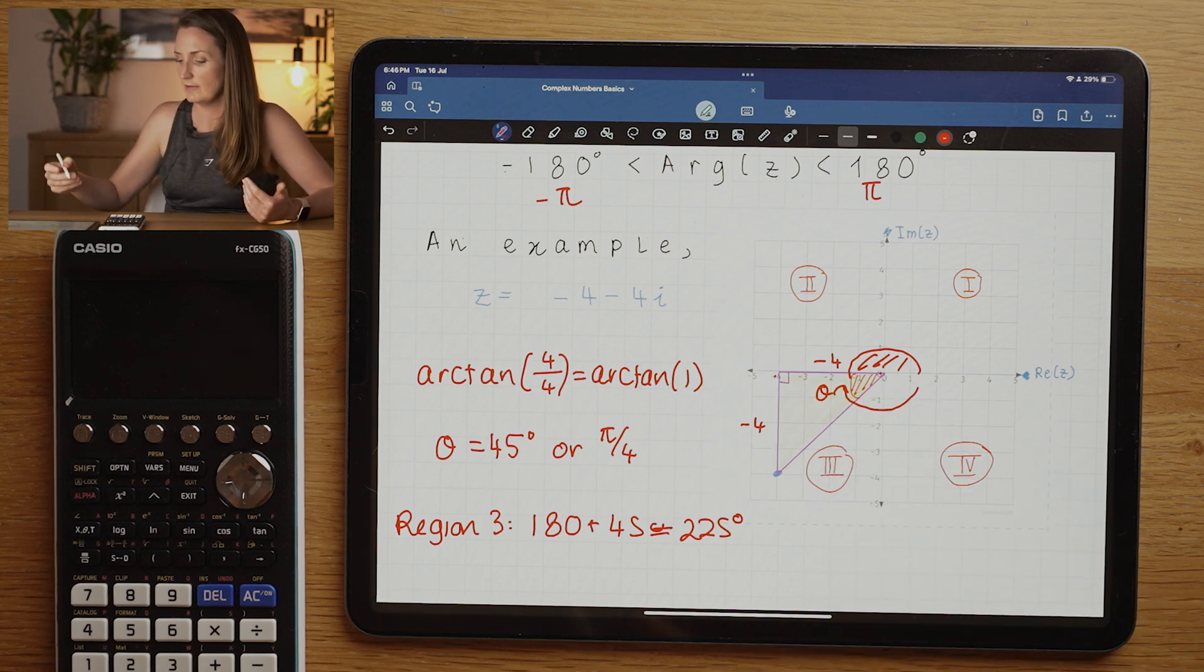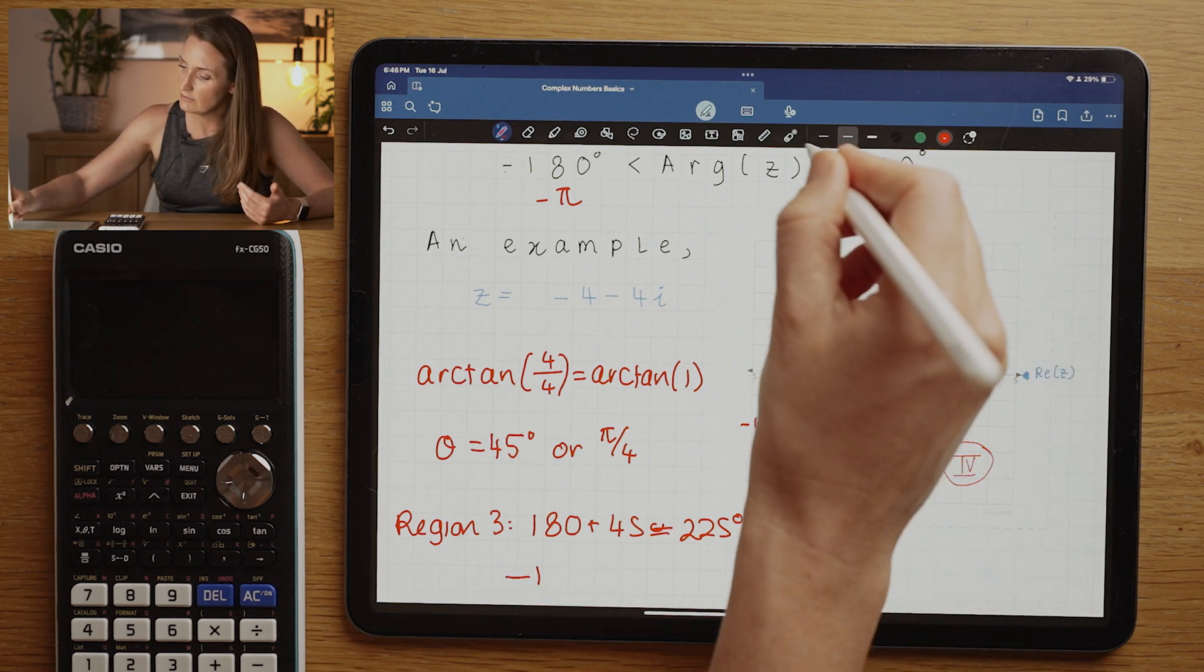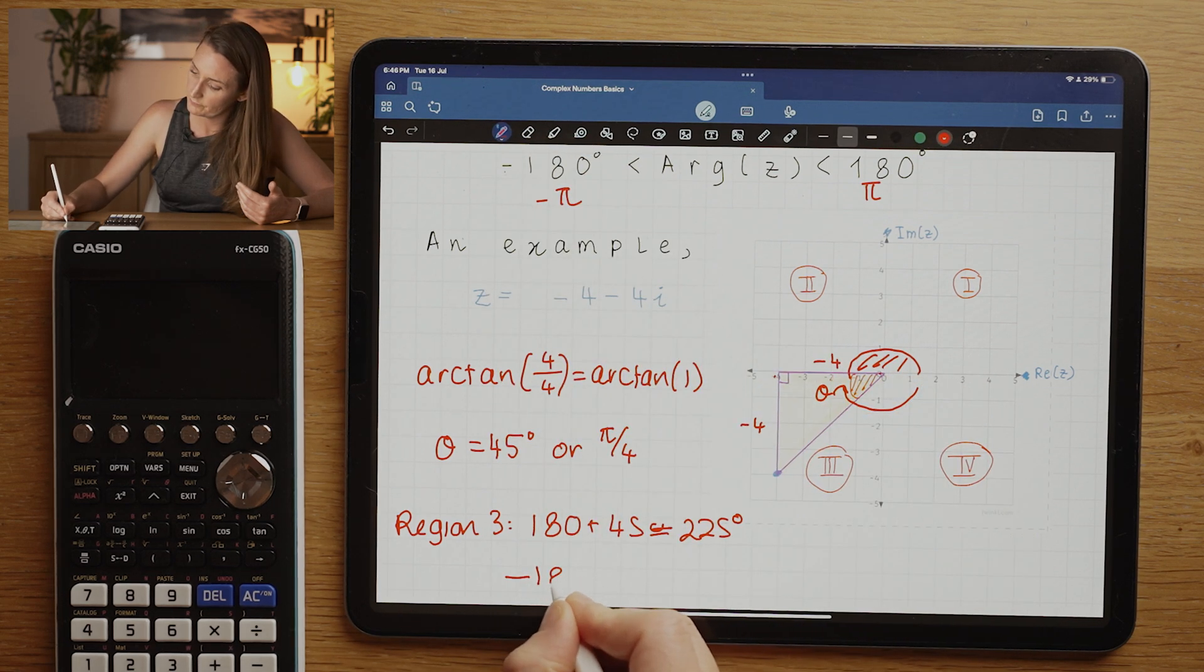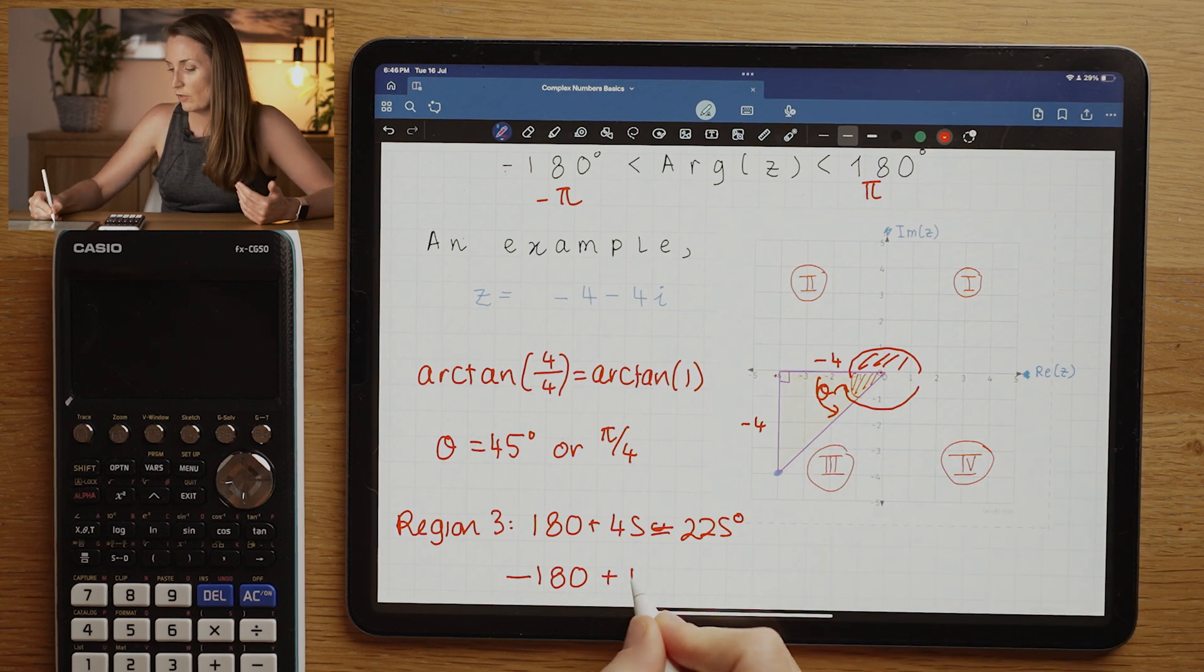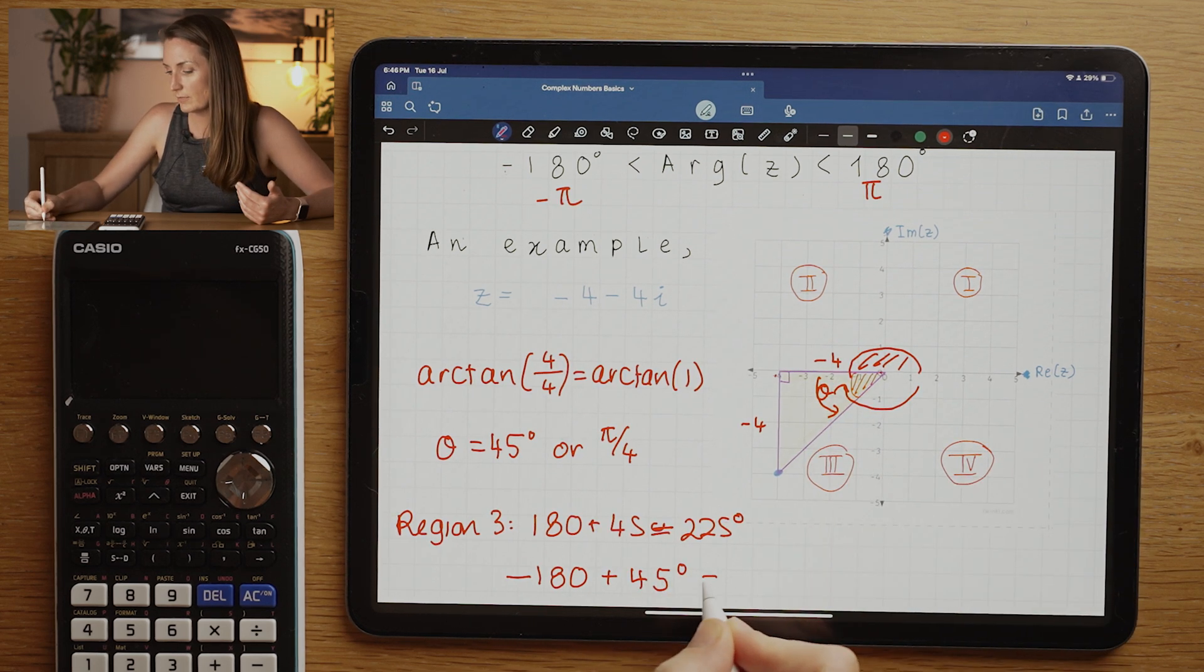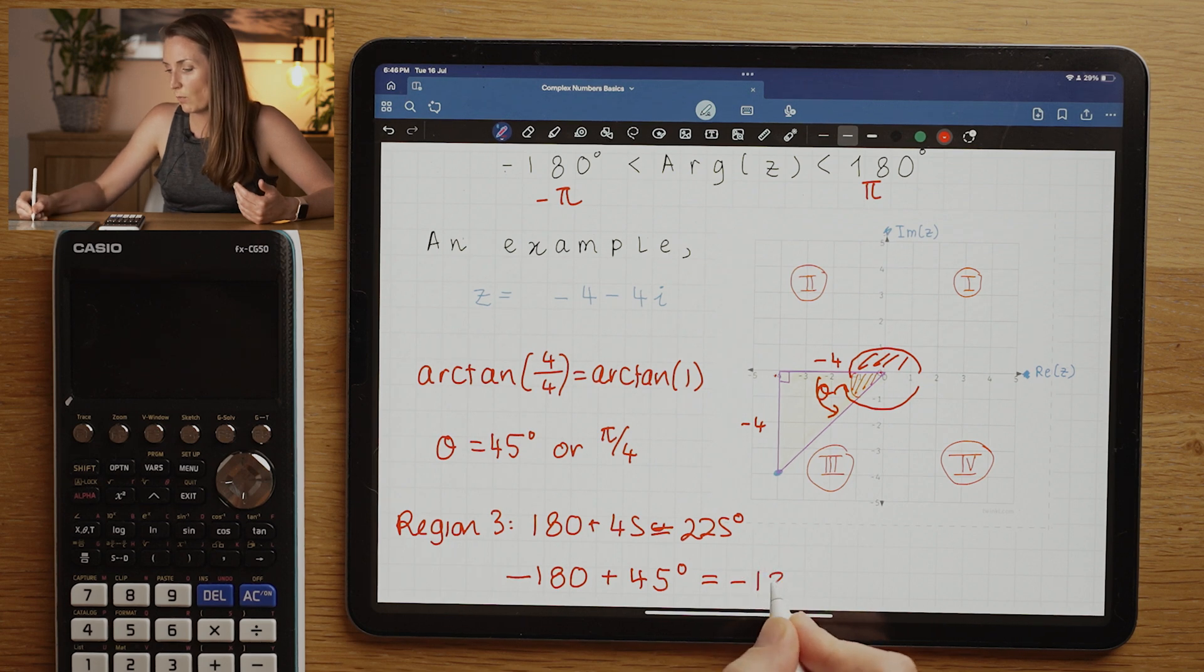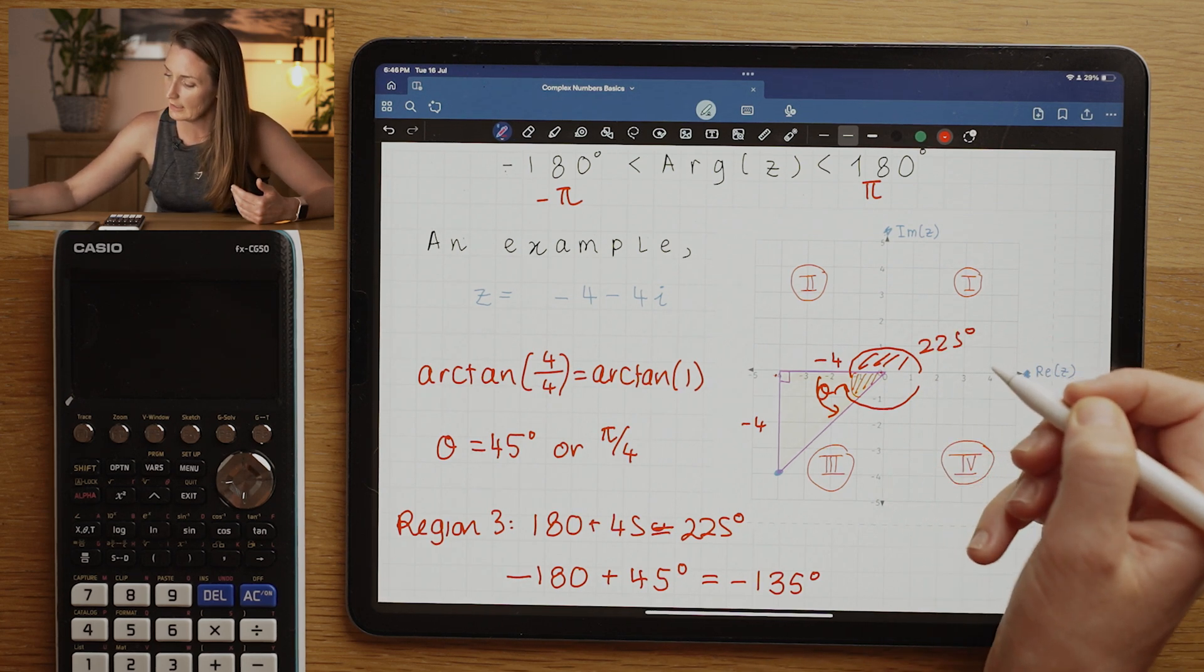So what we're going to do is we're going to go backwards now. When we move this clockwise direction, it's a negative angle. So we would say I'm going to go negative 180 degrees, and then I'm going to add on, because I'm going backwards this direction, the 45 degrees. That is going to mean minus 135 degrees.